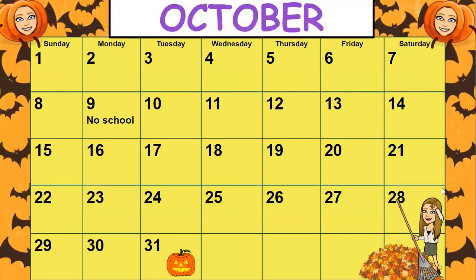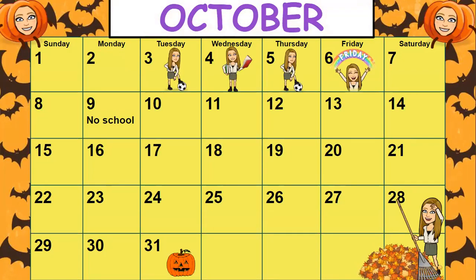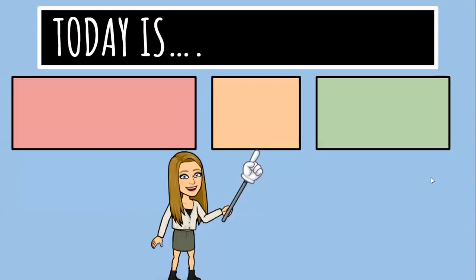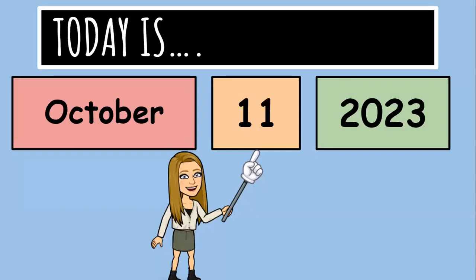Now we have a visual calendar that is large enough for everyone to see. When there are big events happening in our school day, I can put up an emoji there to remind students. For instance, on Tuesdays and Thursdays we have PE, and on Wednesdays we have time at the library. It also shows holidays like the 9th, which was Columbus Day or Indigenous Peoples Day, where we had no school. Then, to reiterate what day it is, students will say the date again — today is October 11, 2023.